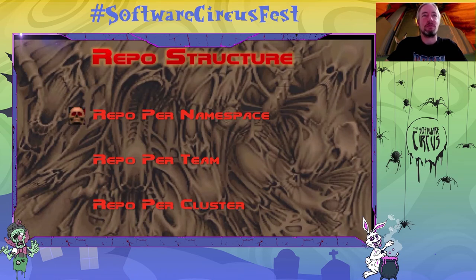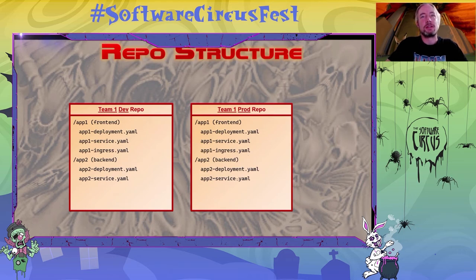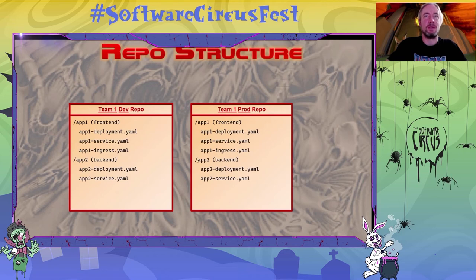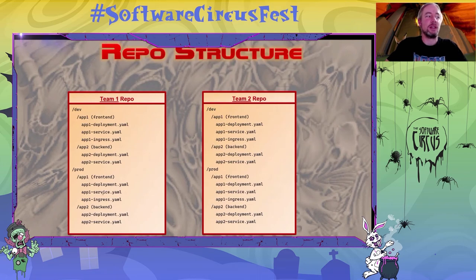First is the one from my examples: repo per namespace. A team's development environment would be one Git repo containing multiple applications, and then the team's production environment would be another GitOps repository. The upside is that you can have different access rights on different repositories — for example, the production repo can only be written to by ops, while developers can happily write to the development environment. The downside is you'll have lots of Git repos and the management of those can get tough. The next option is repo per team, which lessens the number of Git repos — all environments will be in a single Git repo.